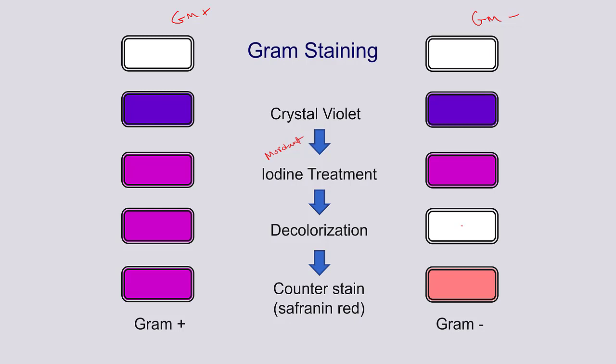The gram positive stays purple or violet, but we can localize the gram negative bacteria with a counter stain, which is a lighter stain — safranin, a red stain. So that bacteria shows up as pinkish red. It's a weaker stain, so it doesn't have any impact on gram positive, which is already colored with crystal violet.